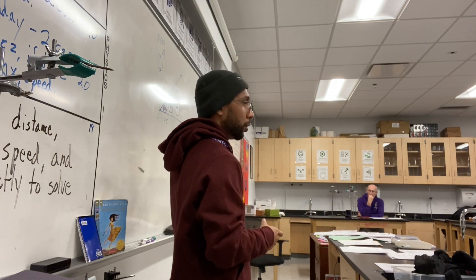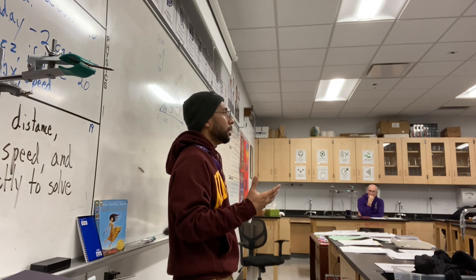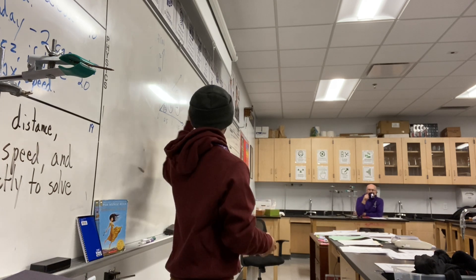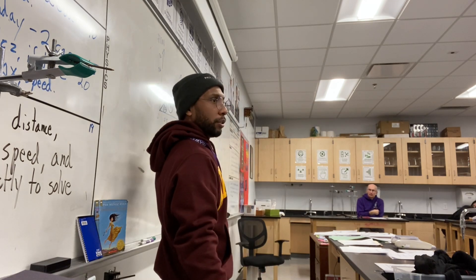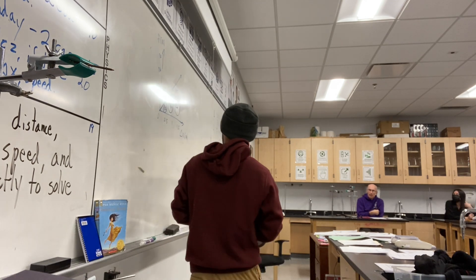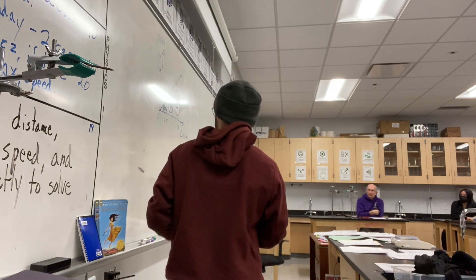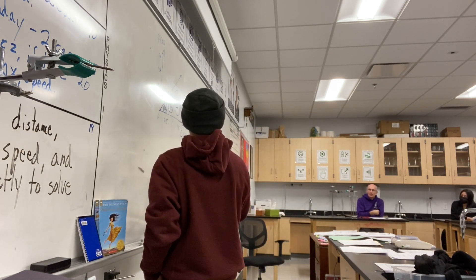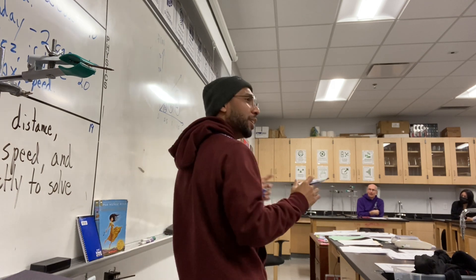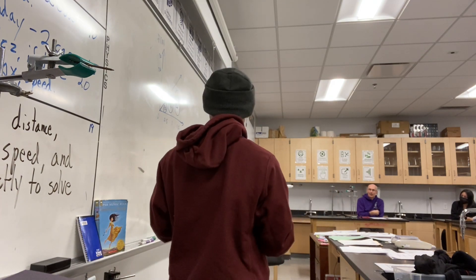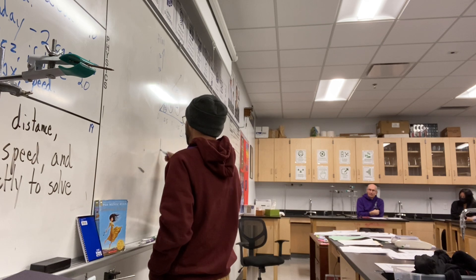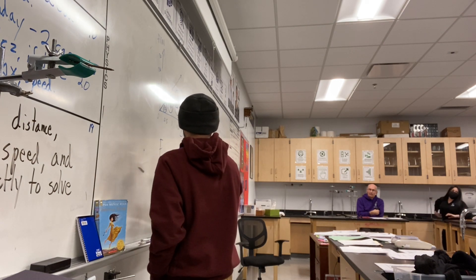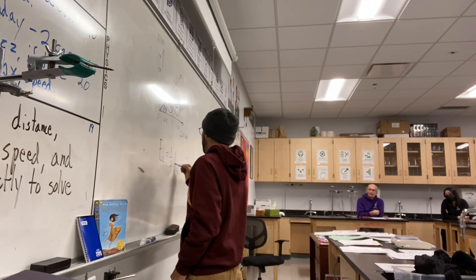So we have two variables that determine how much energy is stored in the spring: the force and the stretch. To figure out how much energy is stored, we need to consider both. A student asks about the energy being somewhere else, but the teacher says they'll write the equation first: E_el, which stands for elastic energy, is equal to one-half times the force times the stretch, or delta x.